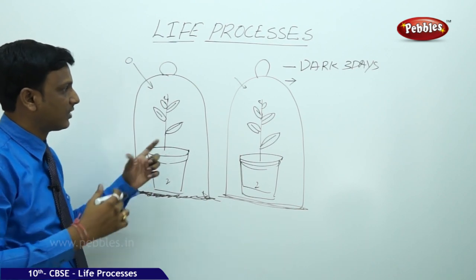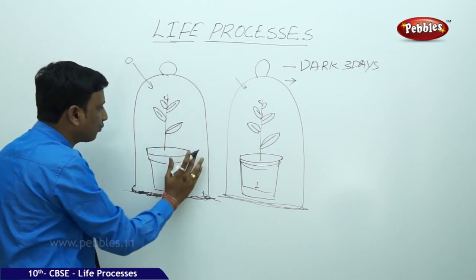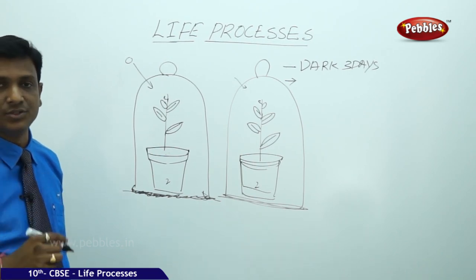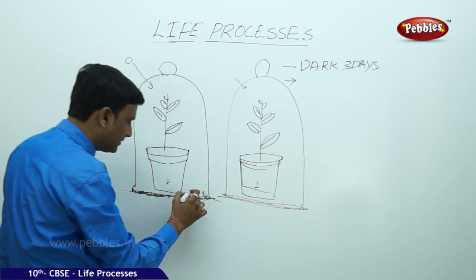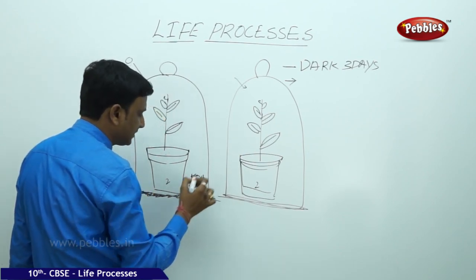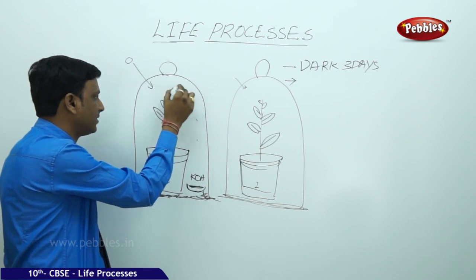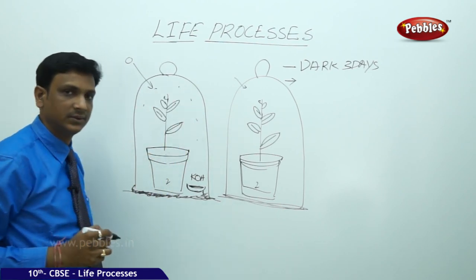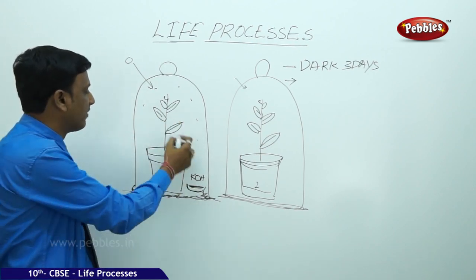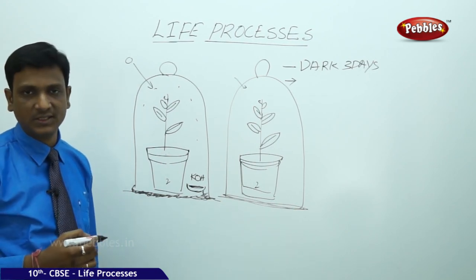There may be some carbon dioxide inside the bell jar already. To remove that, we place a small dish of potassium hydroxide crystals inside the bell jar. Potassium hydroxide absorbs the carbon dioxide present in the bell jar, so there is no carbon dioxide available for the plant to carry out photosynthesis. Both plants are kept in sunlight for five to six hours.